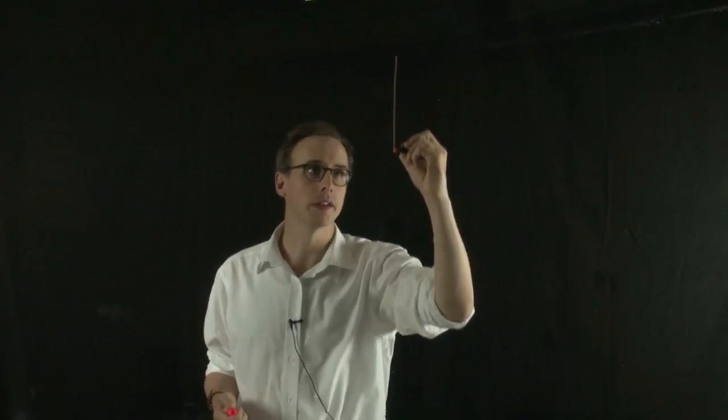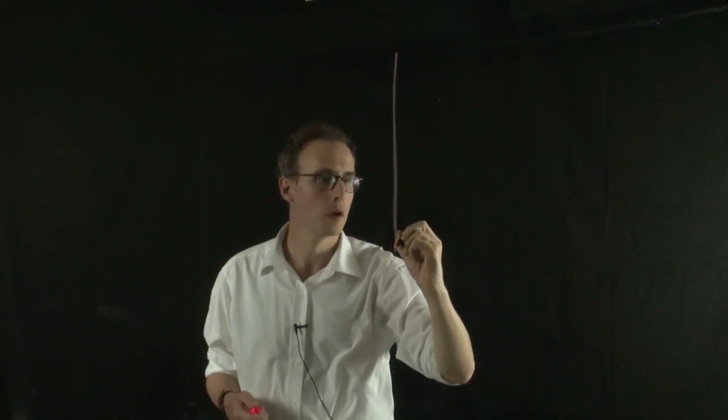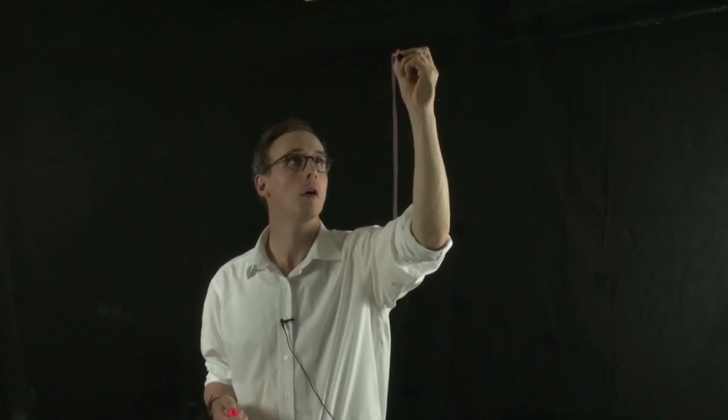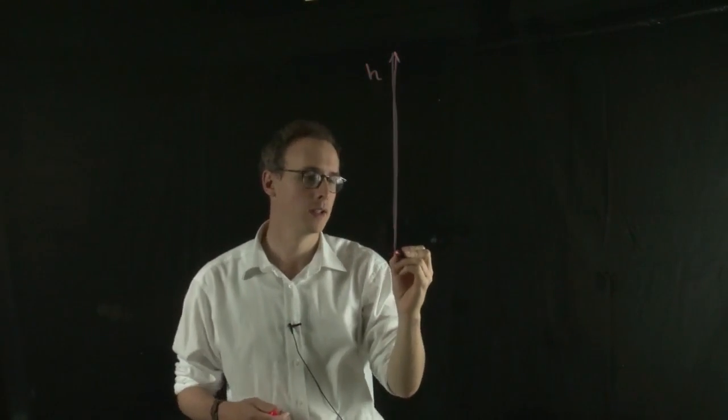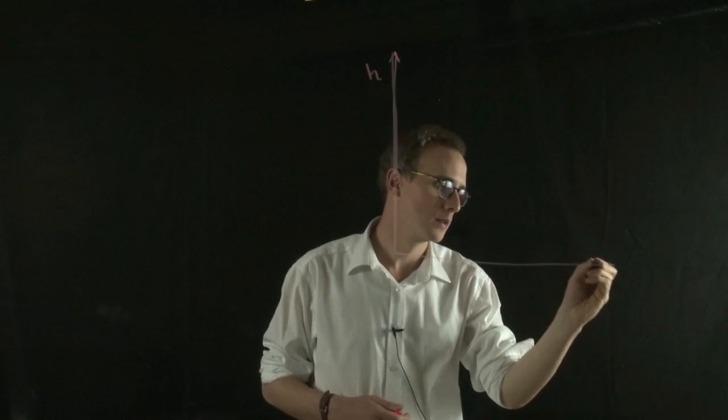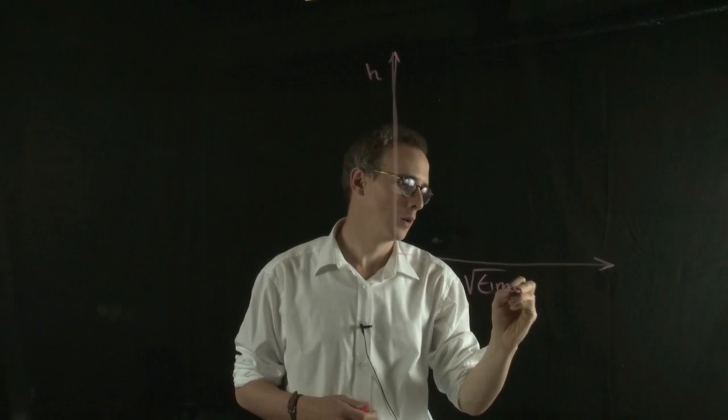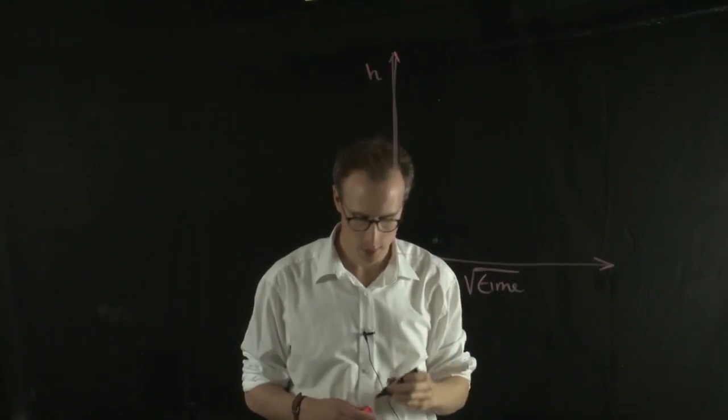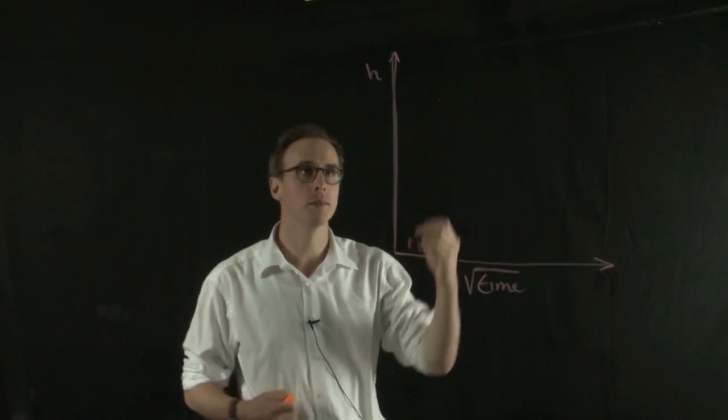If you have sample thickness on your y-axis, we call that h, sample thickness, and we plot that against root time on your x-axis. You would usually get a line that looks something like this.